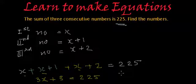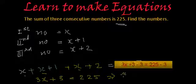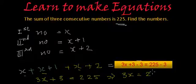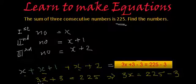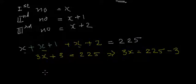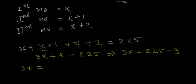So what we get from here? From here we will get 3x is equal to 225 minus 3. We have transposed this 3, or you can say if we subtract 3 from both sides, we will get 3x plus 3 minus 3 will get cancelled, equal to 225 minus 3. So we will have 3x is equal to 222.